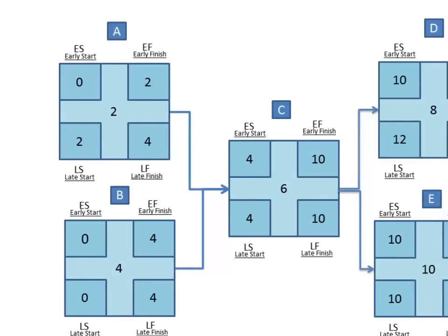We now know that task A has two days of float. So, let me ask you this. Is task A on the critical path? No, because only tasks with zero float are on the critical path. A float of two days means task A can be delayed by up to two days without delaying the project completion date.